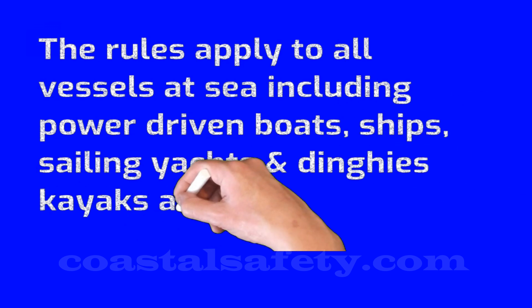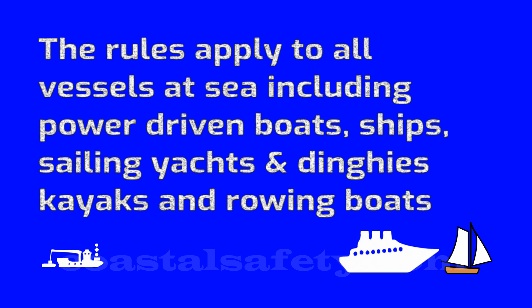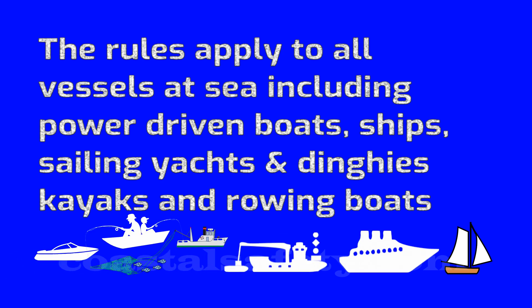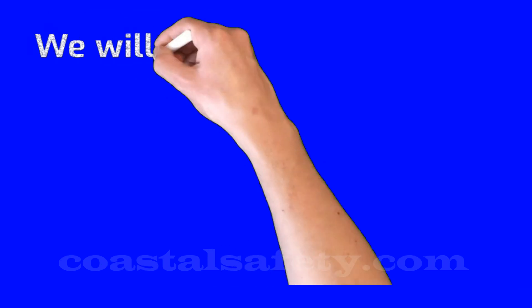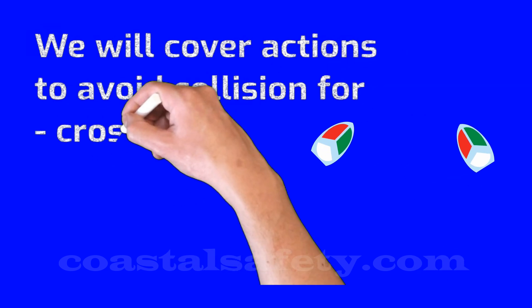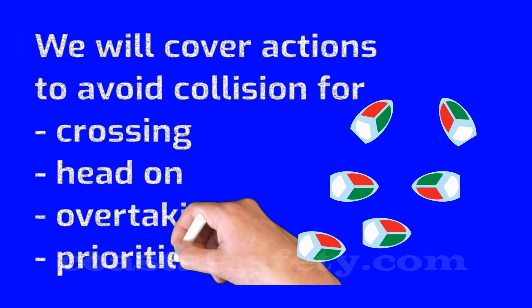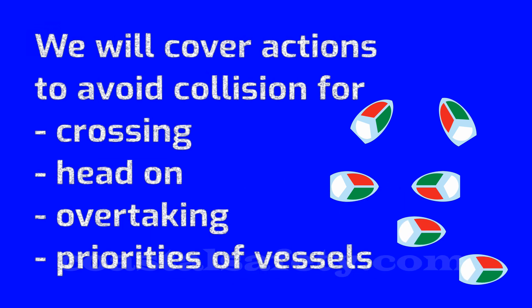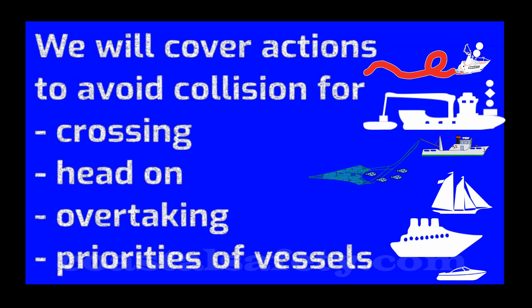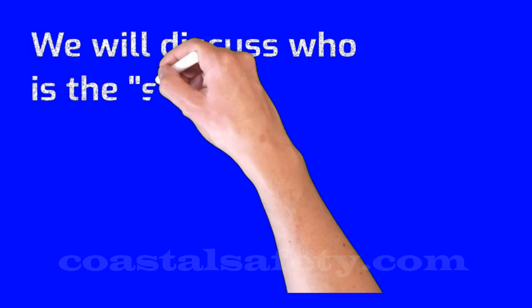The rules also apply to sailing yachts, dinghies, kayaks, and rowing boats. These are the icons we're going to use in the video to describe the different categories of boats. We're going to cover the actions to avoid a collision for the crossing situation, the head-on situation, and the overtaking situation.